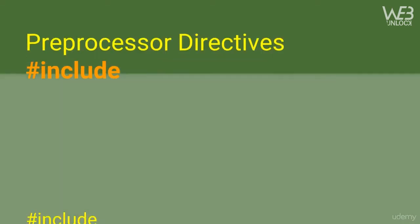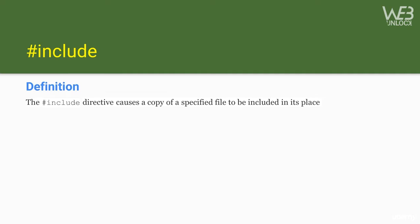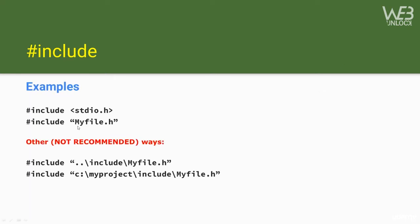The #include preprocessor directive is used to copy the content of one file into another — we've used this extensively to bring content from other files into our source files. The first form uses angle brackets: #include <stdio.h>. The second form uses quotation marks: #include "myfile.h". There is a difference between the two forms, and they can be compiler-dependent, though they follow similar patterns. Other forms use relative paths like #include "../file.h" — but these are not recommended.